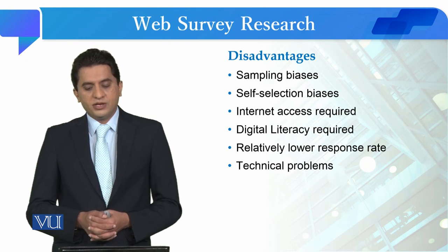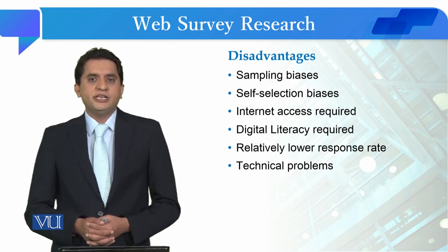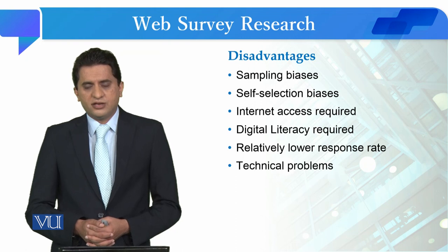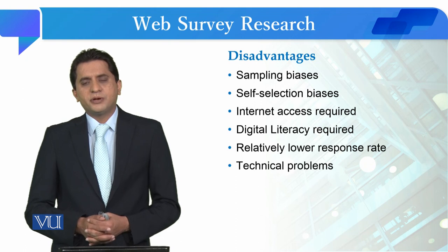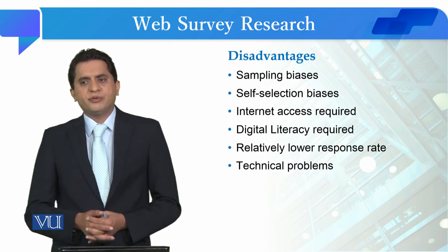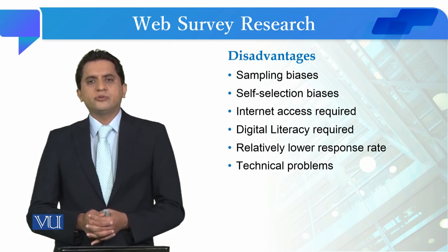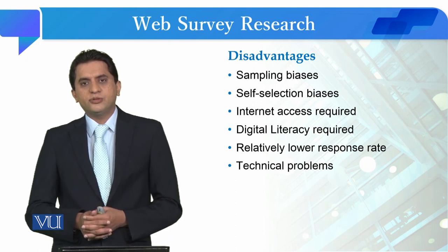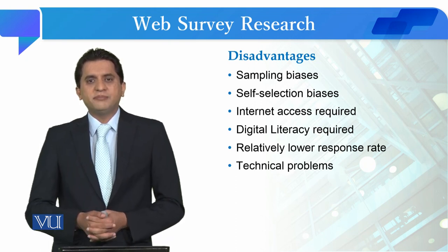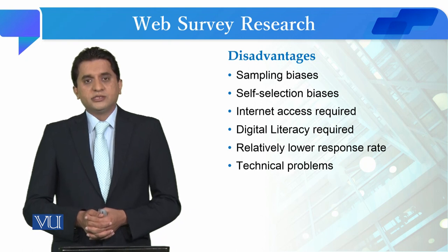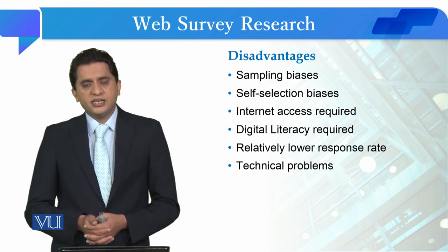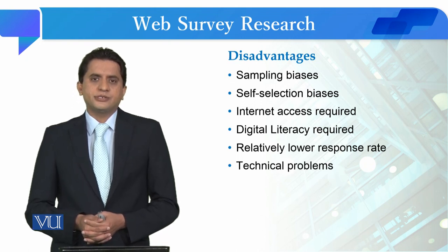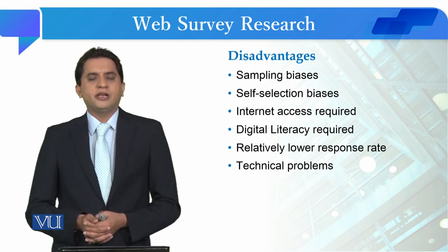A disadvantage is the possibility of sampling bias as compared to physical types of survey, because you can only reach out to a particular group. There is also a self-selection bias — people choose whether or not to participate, which can affect the representativeness of the data.